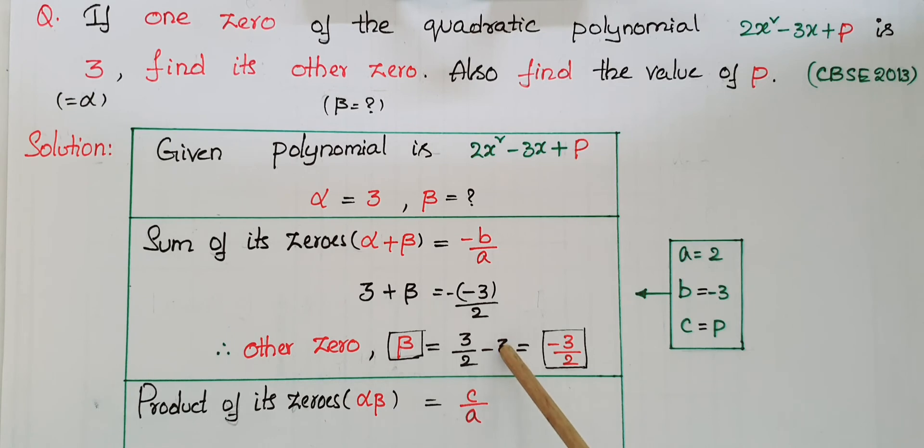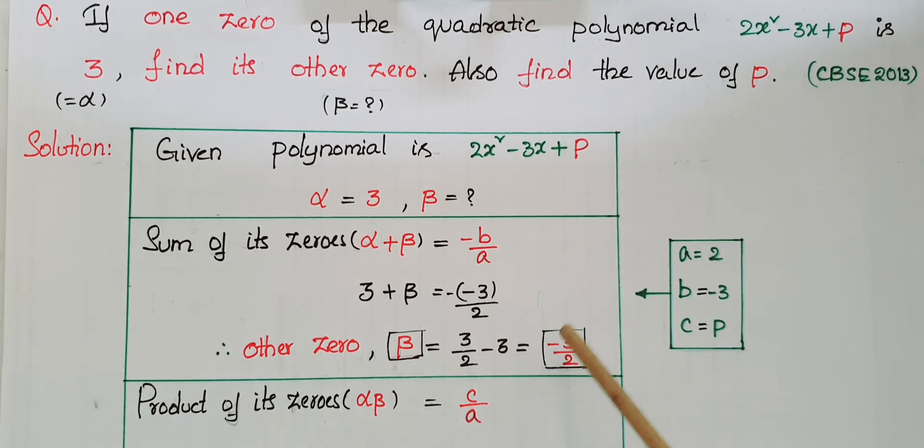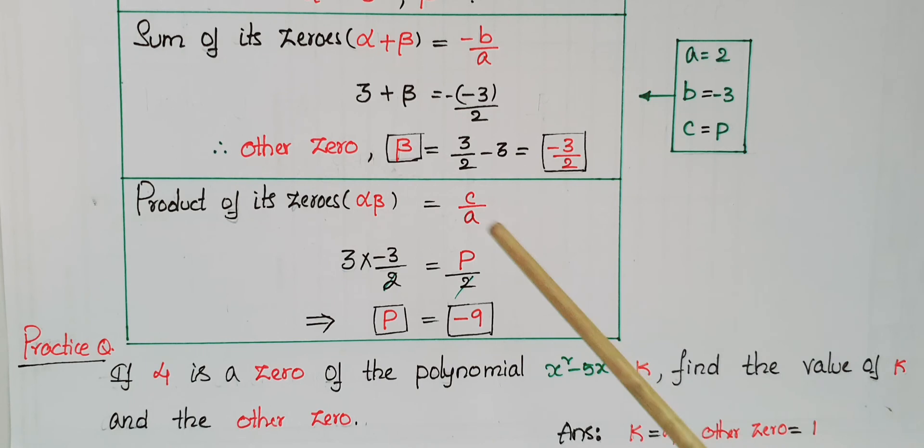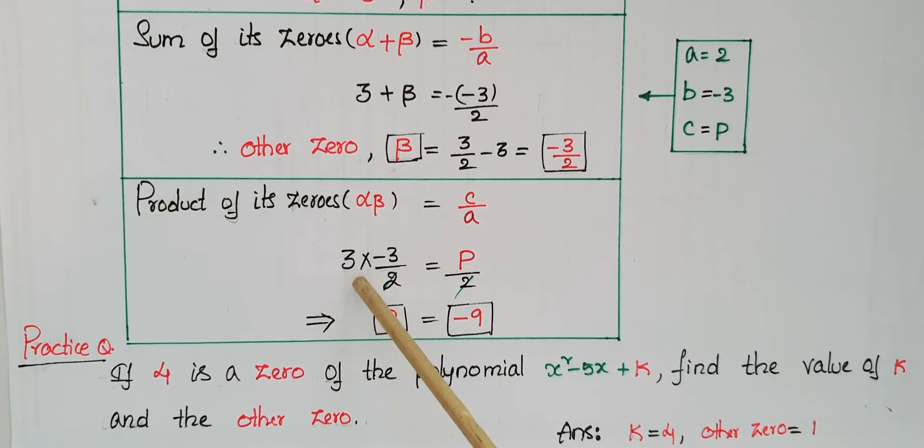Now we have to find p. Product of its zeros: αβ = c/a. So α × β = 3 × (-3/2) = p/2. Canceling 2 on both sides gives us p = -9.